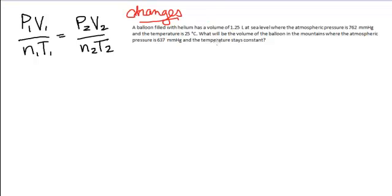And then when you go back through the second time to read it, you want to focus in on the numbers and the units that are given. So here we go. A balloon filled with helium has a volume of 1.25 liters at sea level, where the atmospheric pressure is 762 millimeters of mercury, and the temperature is 25 degrees Celsius. What will be the volume of the balloon in the mountains, where the atmospheric pressure is 637 millimeters of mercury, and the temperature stays constant?